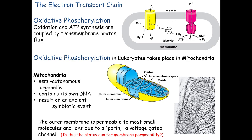We then let the protons come back in through ATP synthase, shown in pinkish-purple in the cartoon. The protons come back across and ATP synthase actually turns, making ATP on the inside. Our last topic is how to get that ATP out of the mitochondria into the cytoplasm where it's needed.